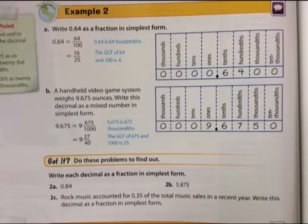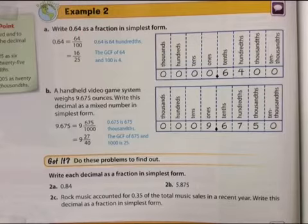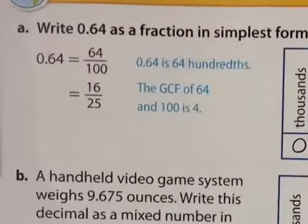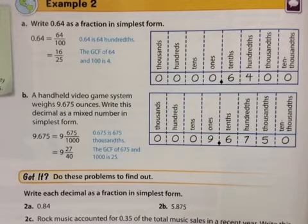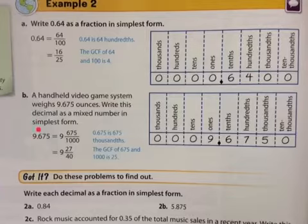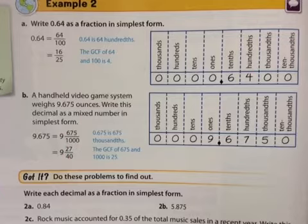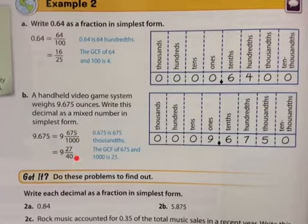For Example 2 on page 102, we look at how to write a decimal as a fraction in simplest form. Remember to look at the place value — you have tenths and hundredths. So 0.64 is 64 hundredths, or 64 over 100. Divide both by 4 and you get 16/25. Over here we have 0.675 — that's 675 thousandths. Put it over 1000 and simplify. Both are divisible by 25, giving 27/25 on top and 40 on the bottom — sorry, that's 27 over 40. That's what it would look like.